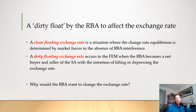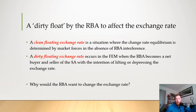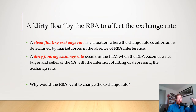There's also a dirty floating exchange rate, which occurs when the RBA becomes a net buyer and seller of Australian currency with the intention of lifting or depressing the exchange rate. You might remember when we looked at the balance of payments — part of the financial account — there was the RBA's reserve assets, basically where they store their currency, gold, etc. They can use this currency to buy and sell on the foreign exchange market to conduct a dirty float, meaning they can either flood the market with Australian dollars or buy a lot of them to take them off the market and affect the value of the Australian dollar.